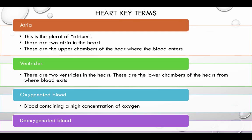Heart key terms. Atria — this is the plural of atrium. There are two atria in the heart; these are the upper chambers where the blood enters. Ventricles — there are two ventricles in the heart; these are the lower chambers from where blood exits. Oxygenated blood: blood containing a high concentration of oxygen. Deoxygenated blood: blood containing a low concentration of oxygen.